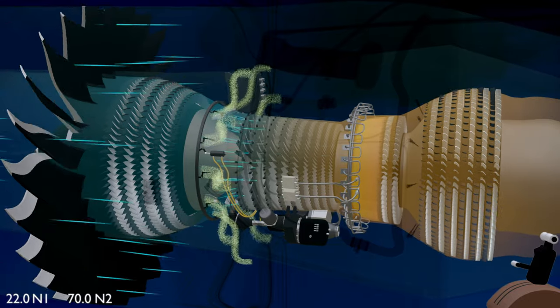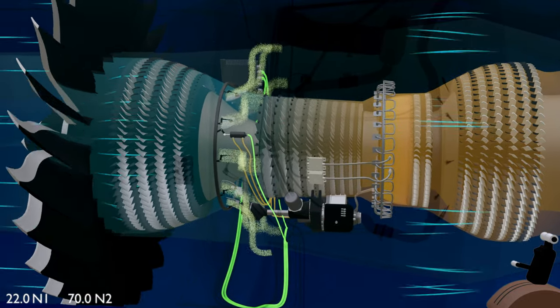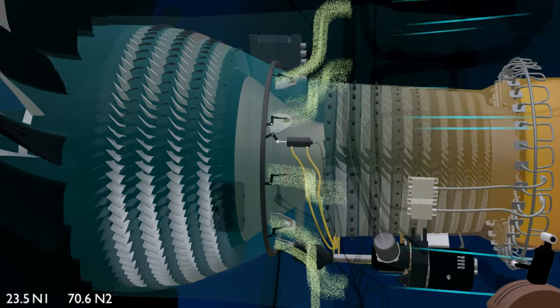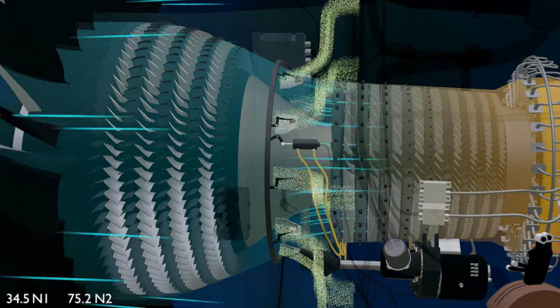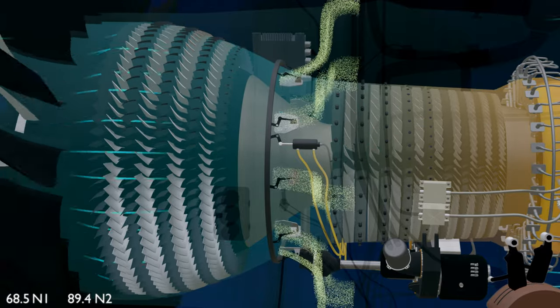LVDTs on the actuators give the actuator position signal to the EEC. The feedback helps the EEC control the bleed valves with precision. As the speed of the engine is increased, the valves are gradually commanded to a more closed position, increasing the airflow into the HPC stages.